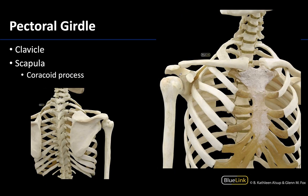Articulating with the humerus will be a bone of the pectoral girdle, and the pectoral girdle is going to include two different bones. You can see the scapula has numerous projections. This is an anterior view right here, and this is a posterior view so you can see quite a bit more of the scapula — that's why we call this the shoulder blade colloquially. And here is the clavicle, which is more anteriorly placed. They articulate together right in this region at the acromioclavicular joint.